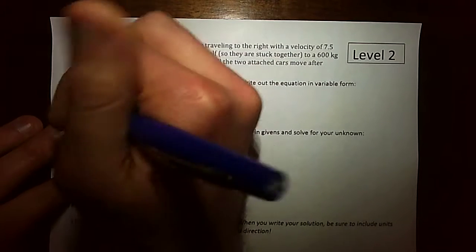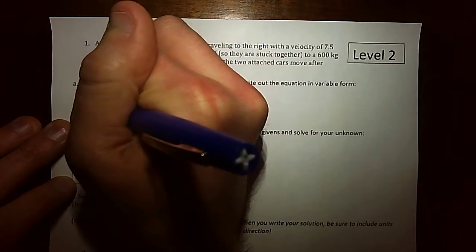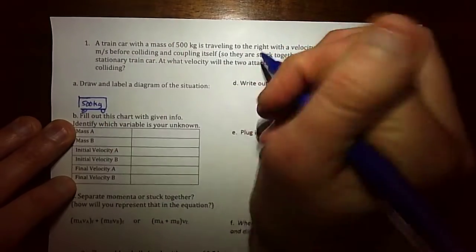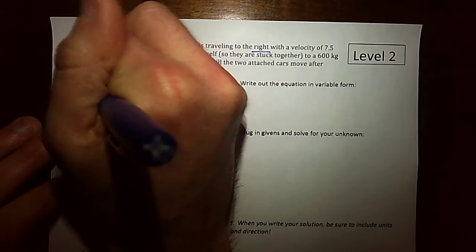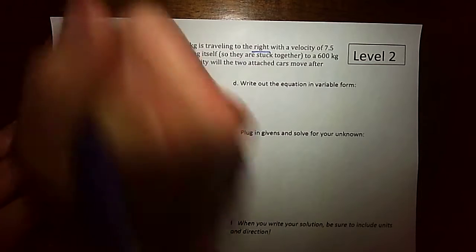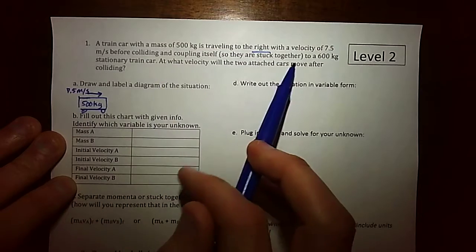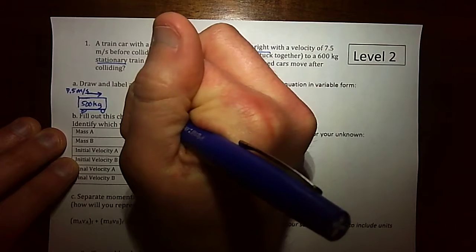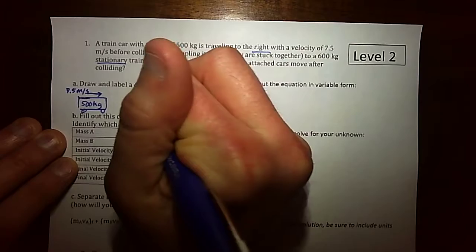It looks like we have this 500 kilogram train car that's traveling to the right with a velocity of 7.5 meters per second before colliding and coupling itself to a 600 kilogram stationary car. So we have this other car over here. It's got more mass, so 600 kilograms, but it's stationary which means it's at 0 meters per second.